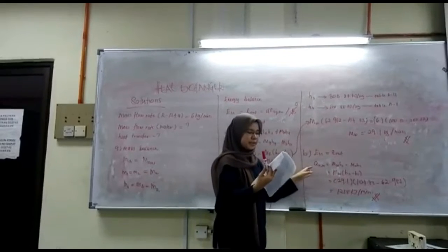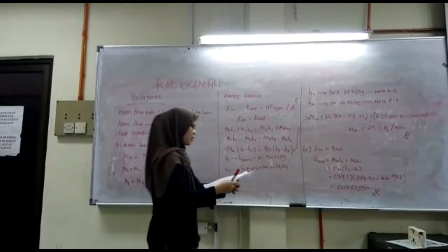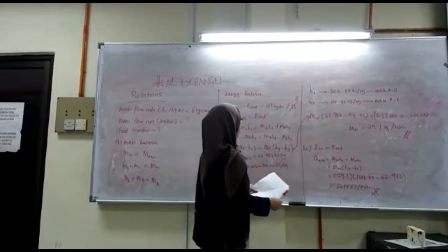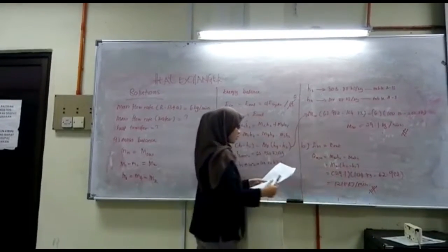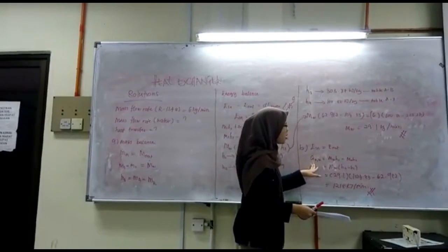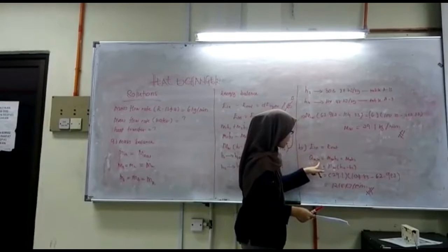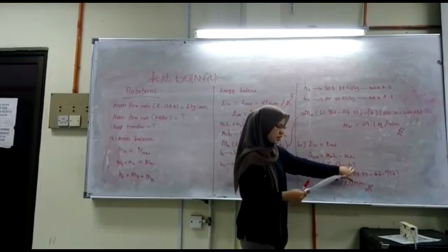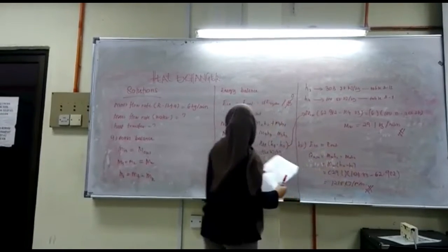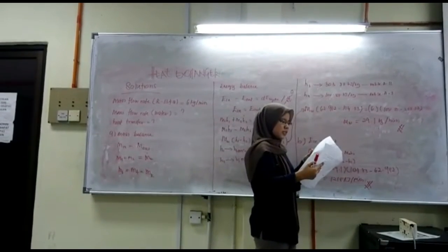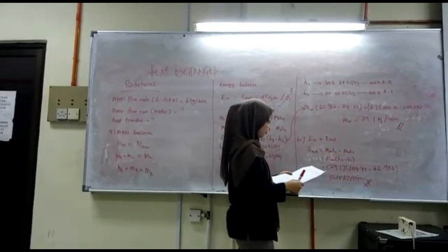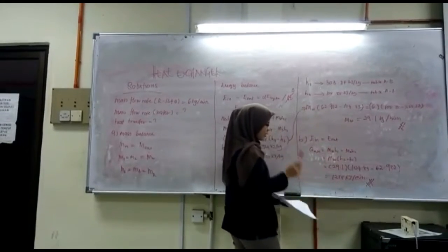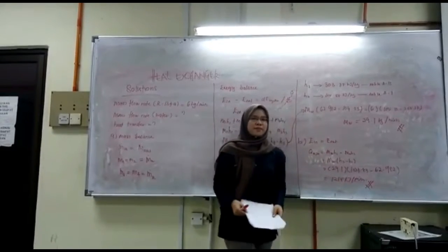For part B, the question asks for the heat transfer rate from refrigerant to water. Using the energy balance equation E_in = E_out, and applying Q = mass of water times (H2 − H1), this equation is used specifically for the water side. Solving gives the heat transfer rate Q equal to 121.8 kW. That's all from me. Thank you.